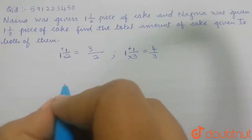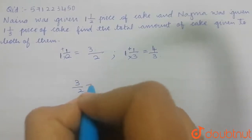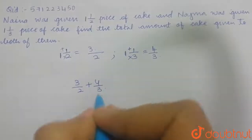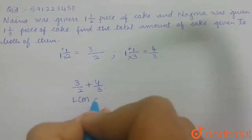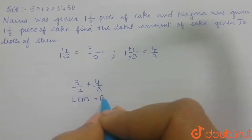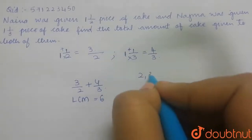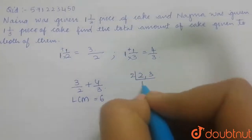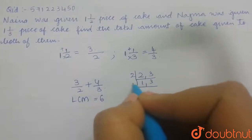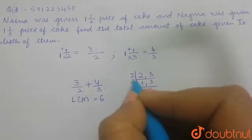So 3/2 plus 4/3. The LCM here is 6. I hope you know how to find LCM. LCM is 2 and 3. 2 times 3 is 6. So LCM is 6. Let us multiply the denominator here by 3 and the numerator by 3.